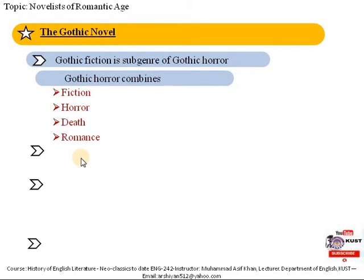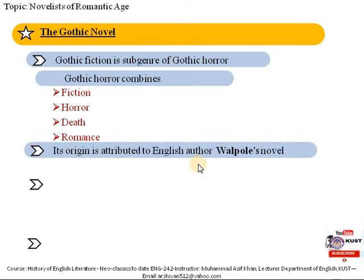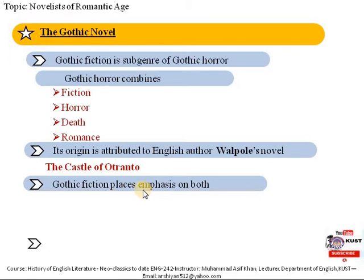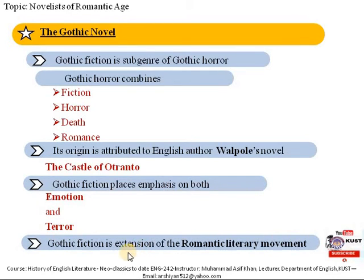Gothic fiction places emphasis on feelings and sentiments in literature and combines them with a sort of pleasant type of horror or terror. It serves as an expansion of the Romantic literary movement, because medievalism is one of the major characteristics of that movement. This inclusion in literature was a relatively fresh phenomenon when Walpole published his novel.